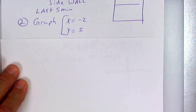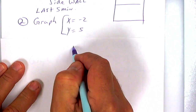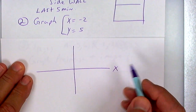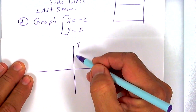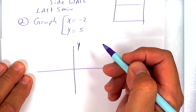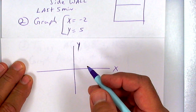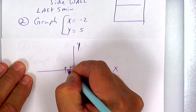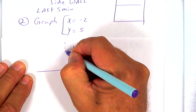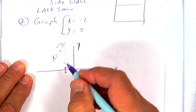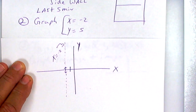I want you to graph these special lines. You have an x-axis which is flat or horizontal, and a y-axis which is vertical up and down. This one says x is equal to negative two, so you go over two, make your tick marks going up and down. x equals negative two is a vertical line, and a vertical line has an undefined slope.